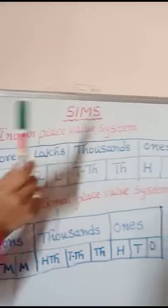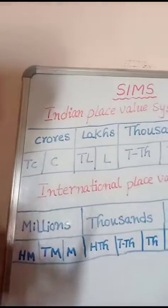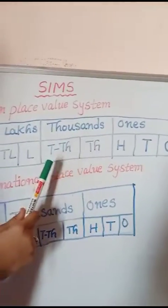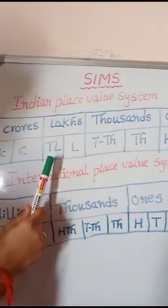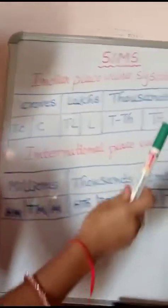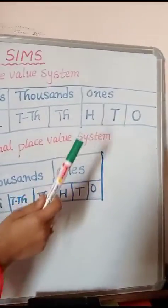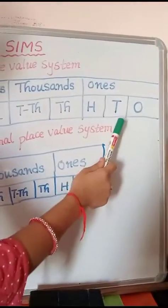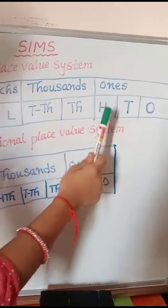Indian Place Value System has 4 types: Ones, Thousands, Lakhs, and Crores. The Ones group has 3 types: Ones, Tens, and Hundreds.